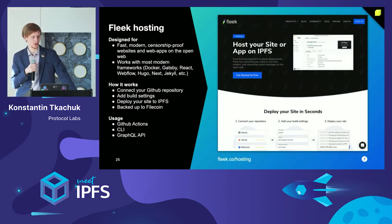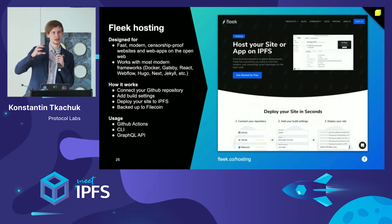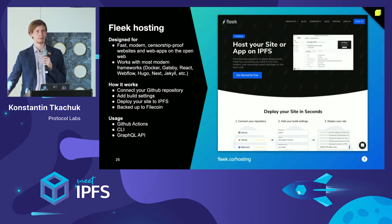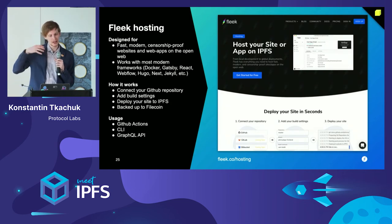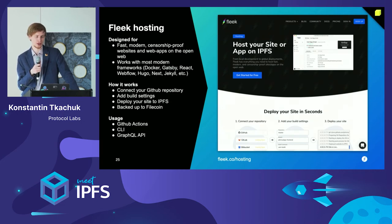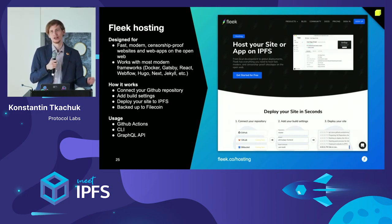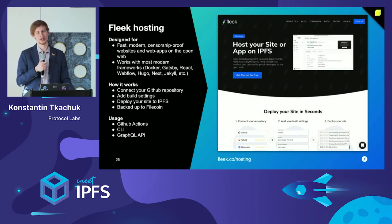There is also Fleek, a hosting solution that allows you to have fast, modern, and censorship-proof websites and web apps on the open web. It builds on top of IPFS and Filecoin, letting you host your website on IPFS nodes, served directly from browsers like Brave. It's easy to implement — just connect it to your GitHub repository, add build settings, and deploy your site on IPFS. It's backed by Filecoin as a redundant solution, ensuring your website is available whenever you need it.